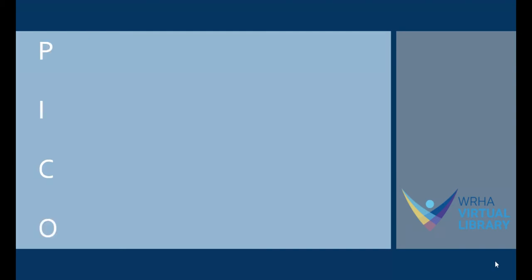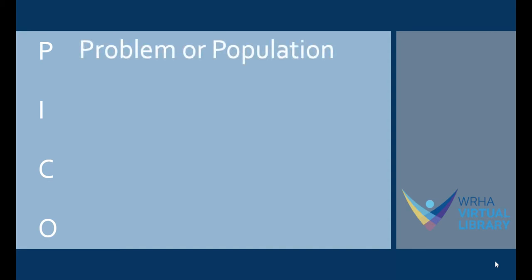PICO is an acronym. The P stands for problem or population. For example, you could look at adults as a population or asthma as a problem, or combine the two to look specifically at asthma in adults as a population.